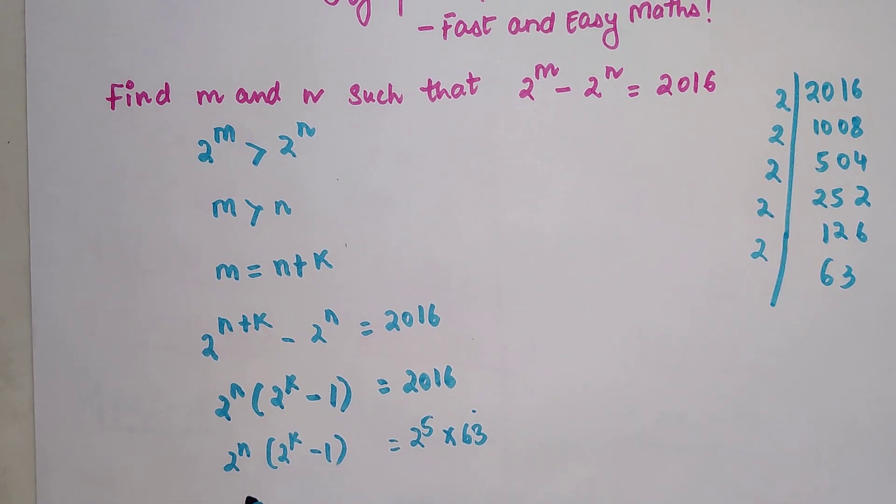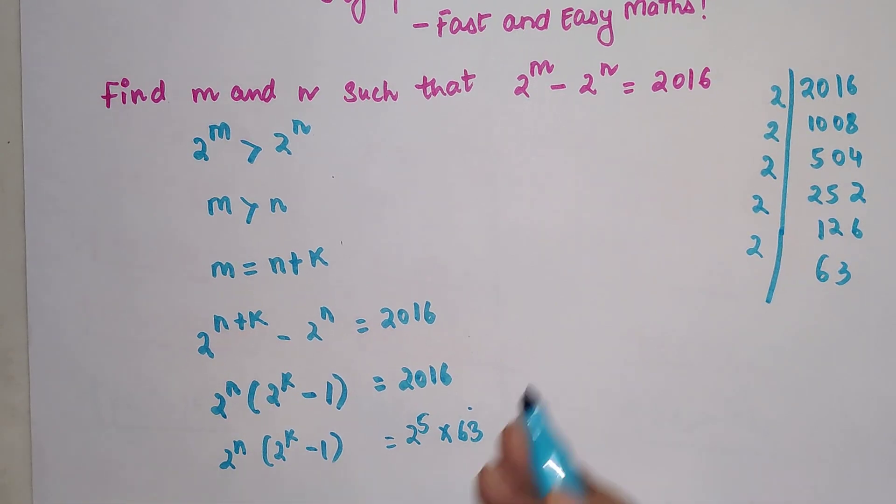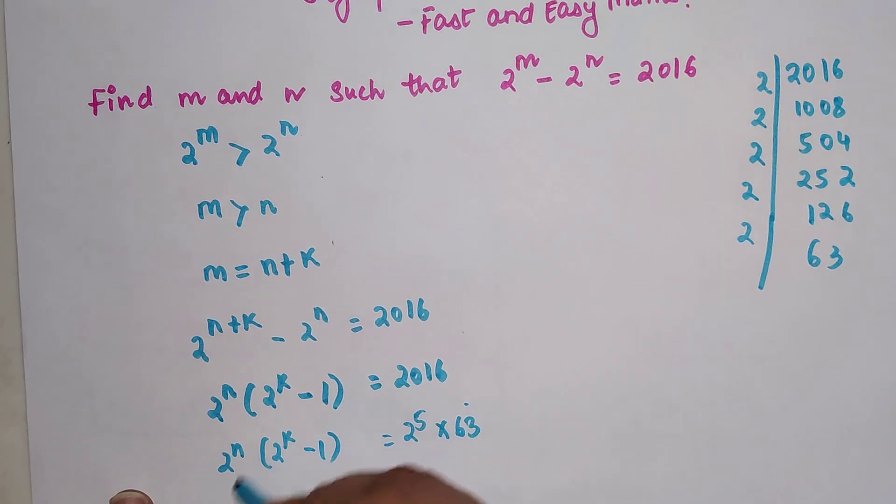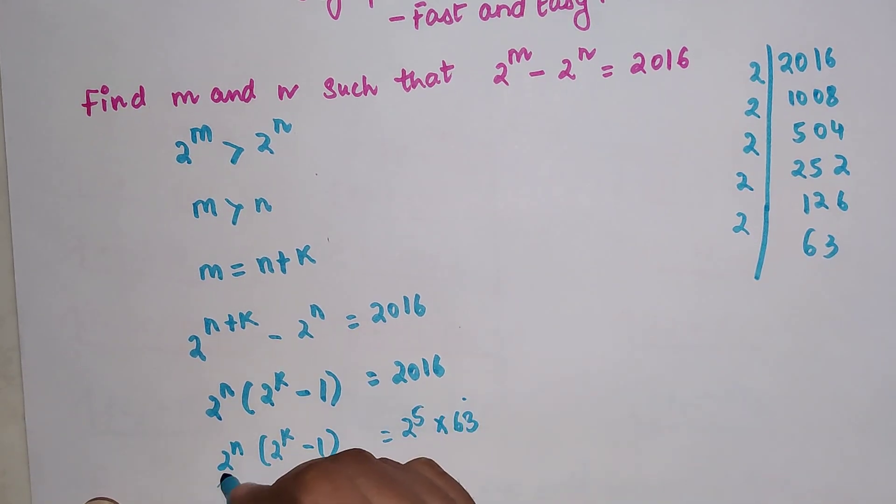Any number which has 2 raise to some value, that number will always be an even number. So I can say this will be an even number, and this is also an even number.